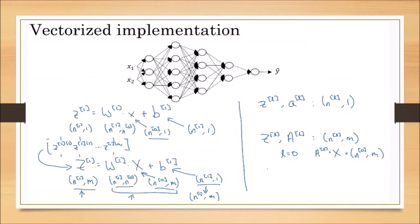Using this vectorized implementation, we obtain Z1 as an n1×m matrix. From this Z matrix of size n1×m we calculate the activation units, so the activation A1 of the first layer also has size n1×m, where rows indicate the number of activation units and columns indicate the particular training sample.